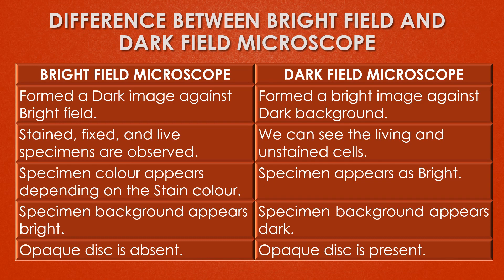Next are the differences between the bright field microscope and the dark field microscope. The bright field microscope forms a dark image against the bright field, while the dark field microscope forms a bright image against the dark background. In the bright field microscope, stained, fixed, and light specimens are observed, but in the dark field microscope we can see living and unstained cells.